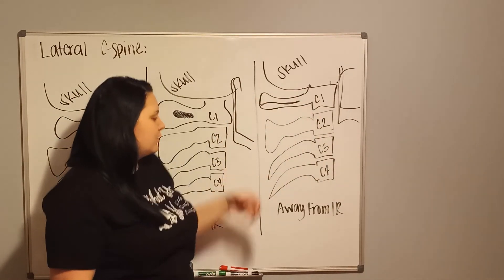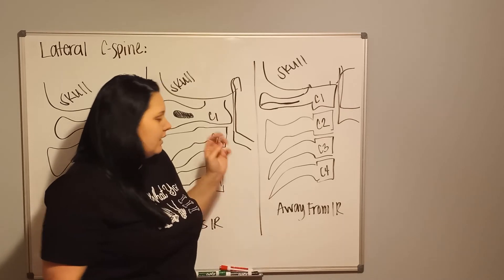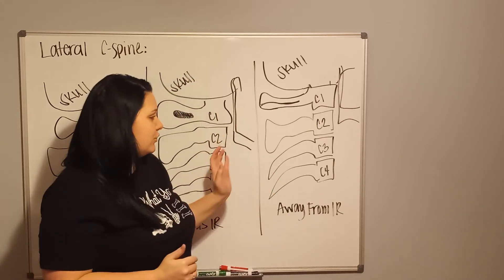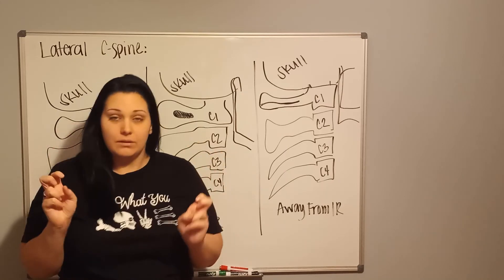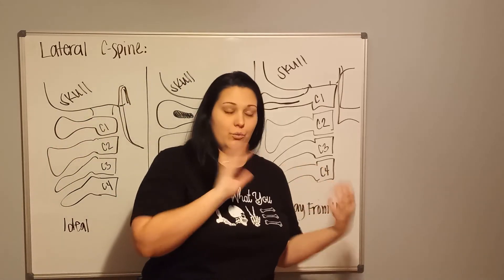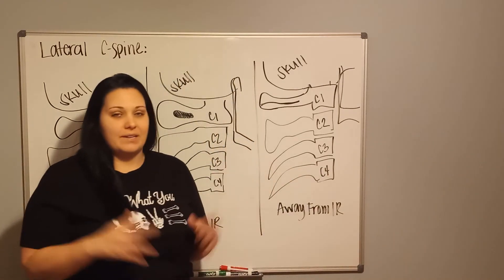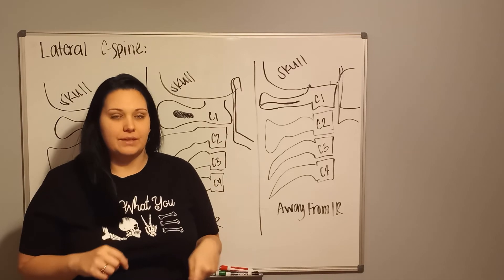So I'm going to take a second and show images of actual X-rays of each of these: one ideal, one away from the image receptor, one towards the image receptor. Then I'll come back and explain it a little further.